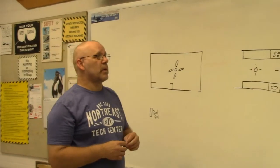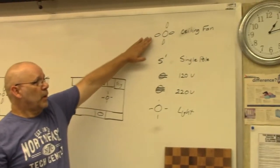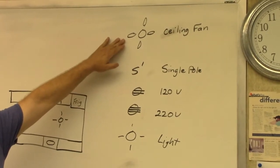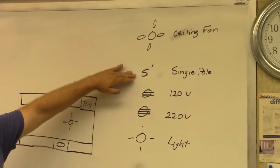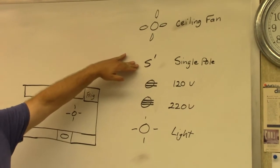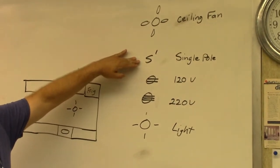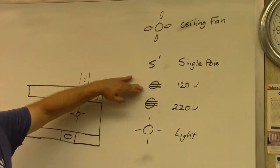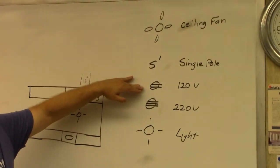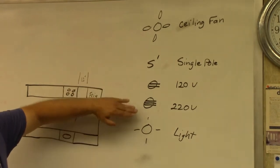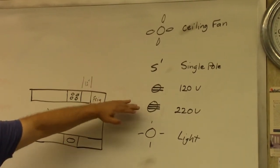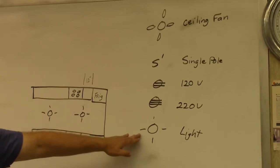First of all you need to know some symbols. On a set of plans, if you see this symbol, it's for a ceiling fan. If you see this one, S1 is a single pole switch. That means it's a light that's turned on from one place. This symbol is for a 120 volt outlet. This one is for a 220 volt outlet. This one is for light.